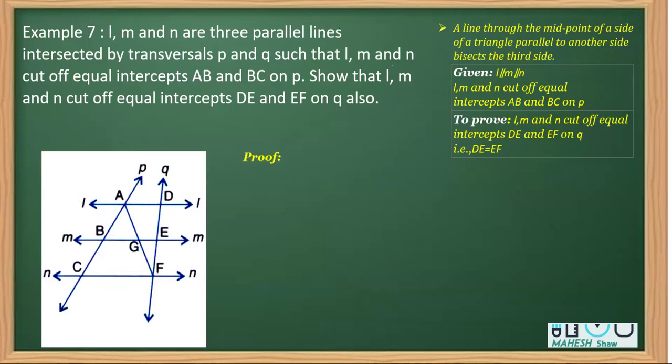So once again, you can see the given part here. These three lines are parallel and we will say that L, M, N cuts off equal intercepts AB and BC on P, and in the to prove part, we have to prove that they cut equal intercepts on Q as well. That means in turn, we have to prove DE is equal to EF.